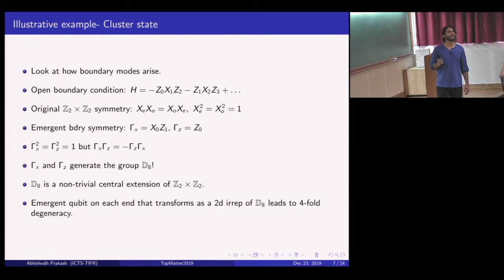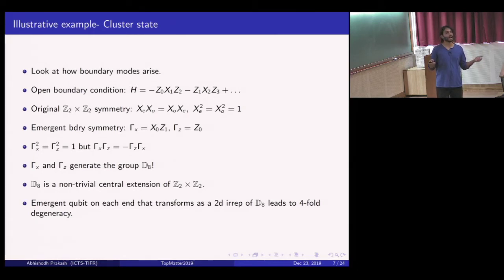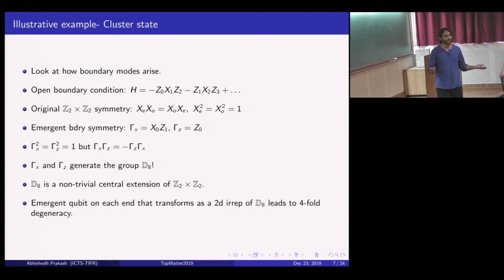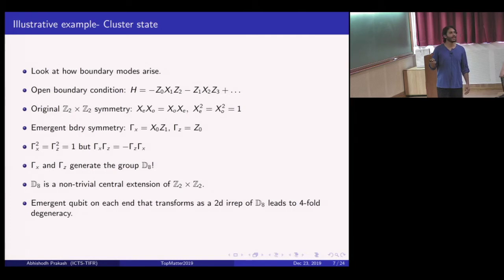None of this is a coincidence. The original global symmetry Z2 × Z2, the new symmetry D8 that appears on the boundary, and the phase of matter the cluster state belongs to are all intimately connected. For example, you could ask what other symmetry groups can arrive at the boundary with a different termination. It turns out you cannot generate, say, D6—there are specific groups that can emerge from the boundary, very specifically tuned to the phase of matter, and some which cannot.